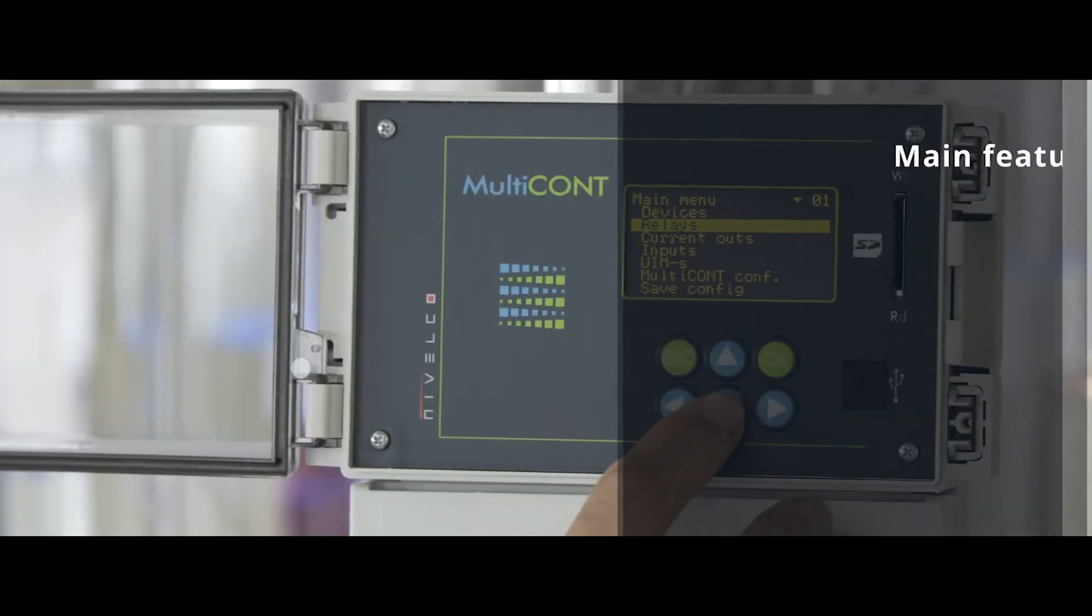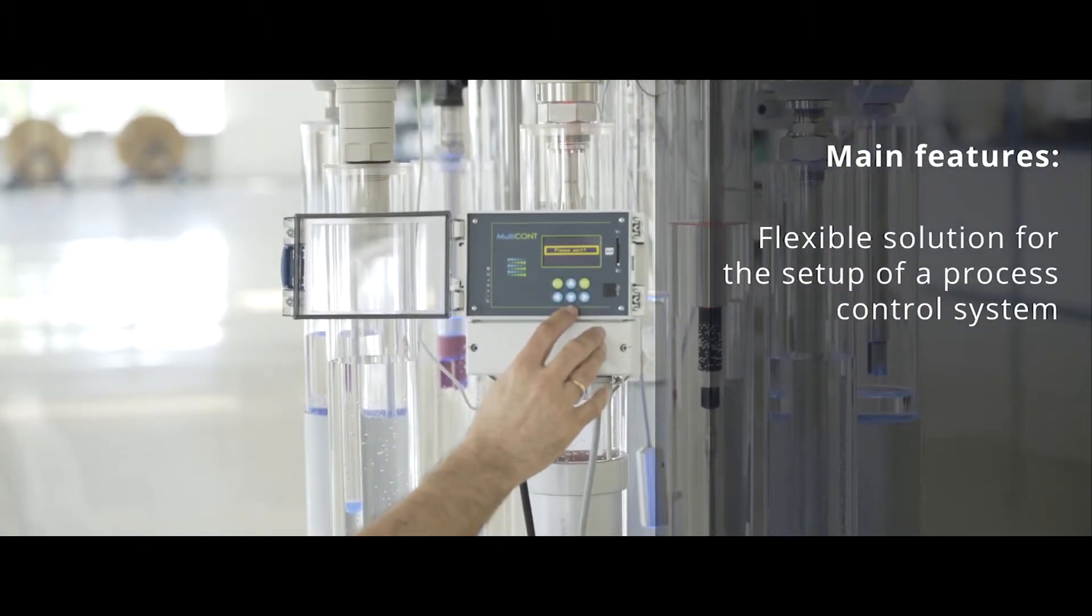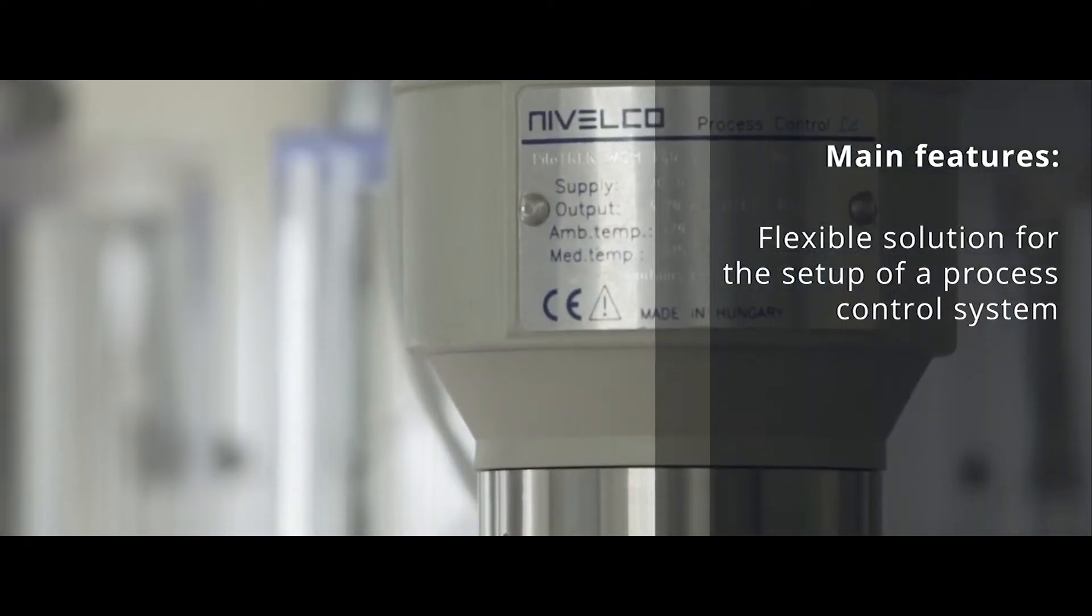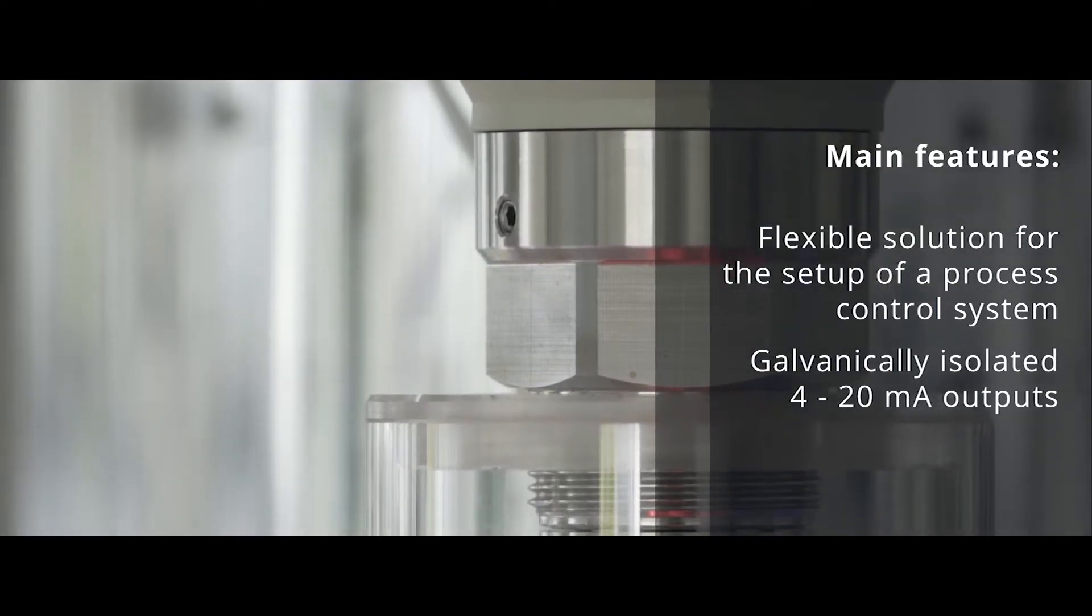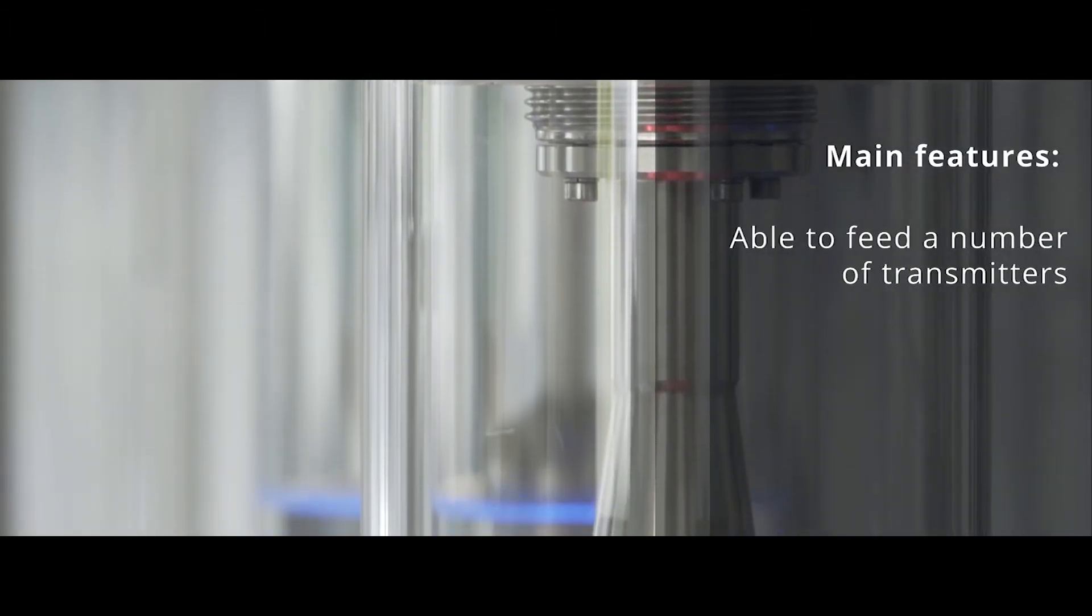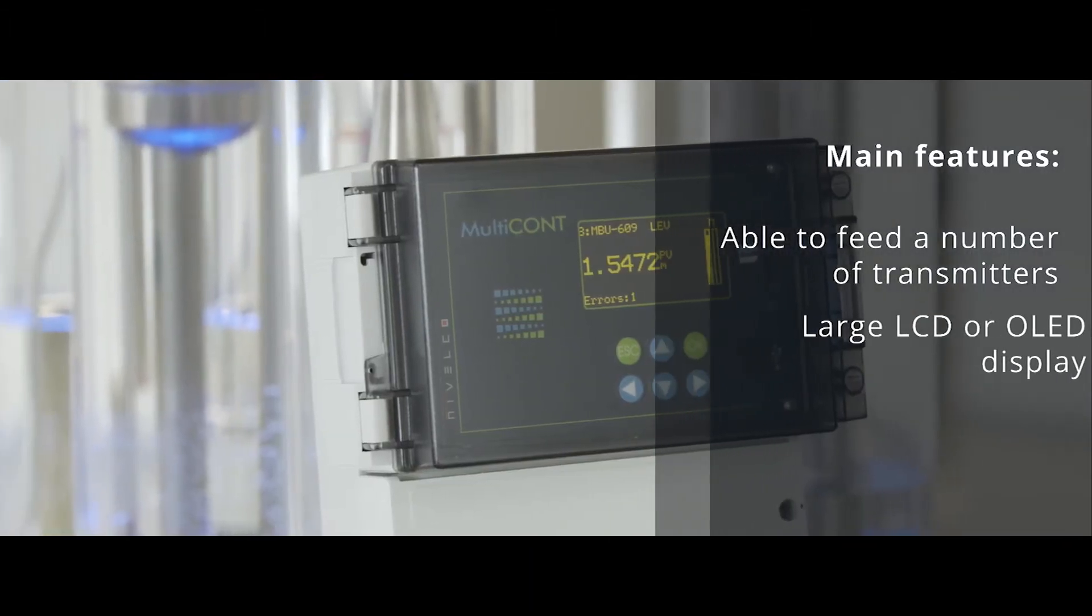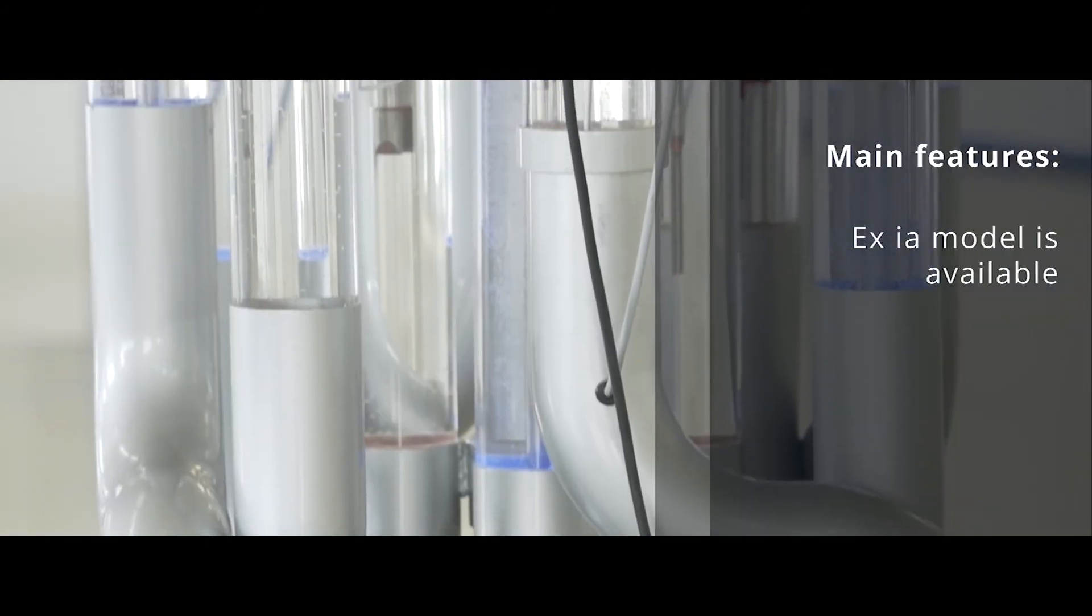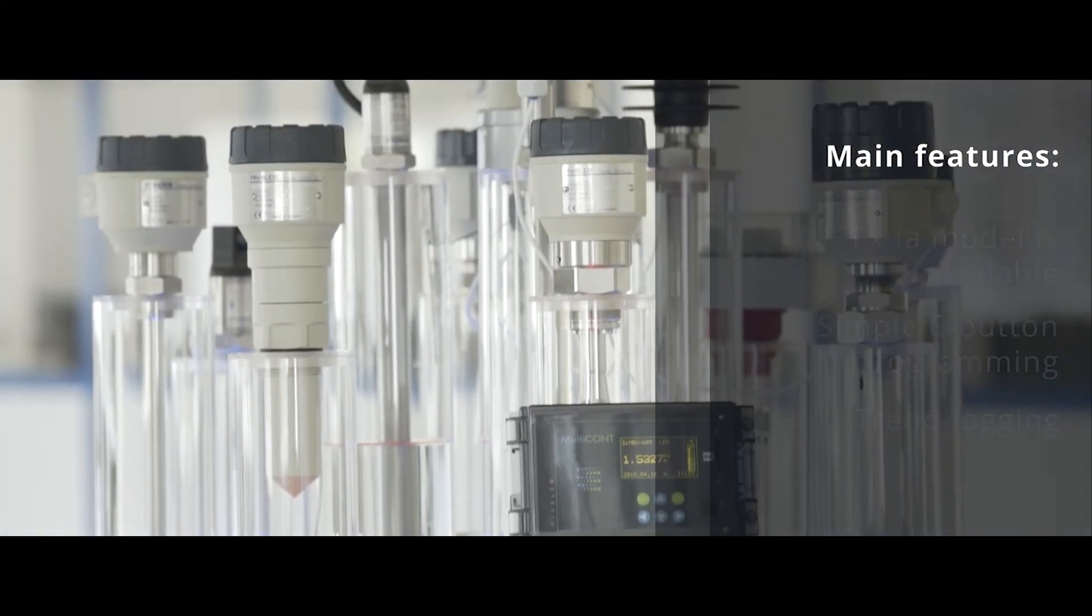The main features of Multicont are the following: flexible solution for commissioning a process control system consisting of Nivelco's HART-based intelligent level, temperature or pressure transmitters. Galvanically isolated 4 to 20 mA outputs assignable for the transmitters. Can feed up to 15 standard or a maximal of 4 ATEX rated transmitters. Highly informative large LCD or OLED display. ATEX model is available. Simple six-button programming. Trend logging into internal memory or external SD memory card.